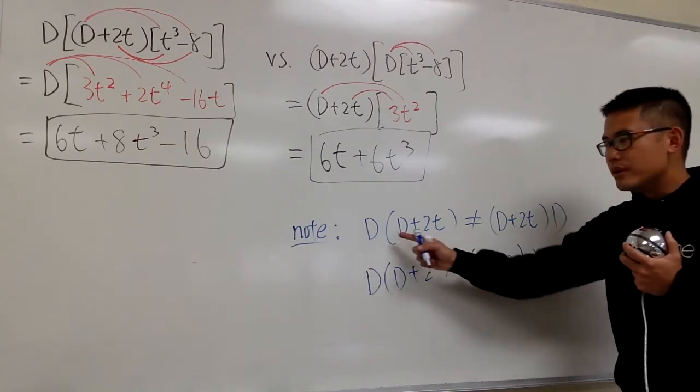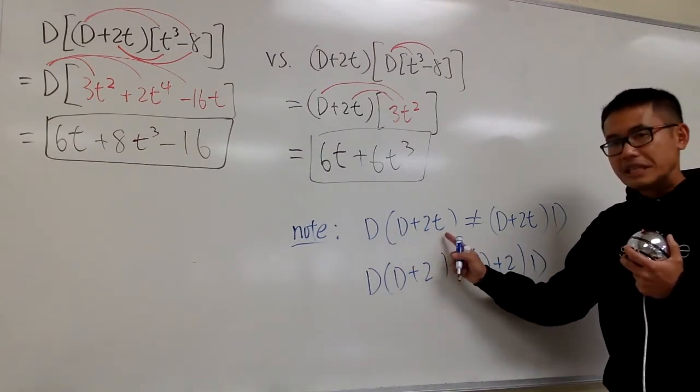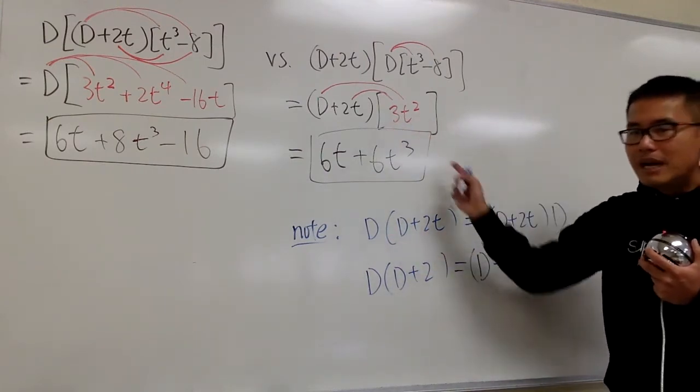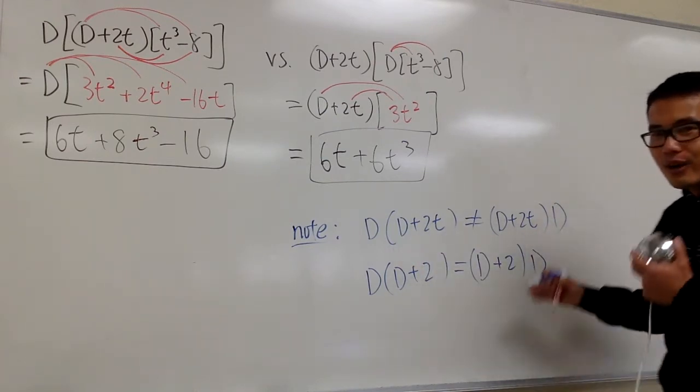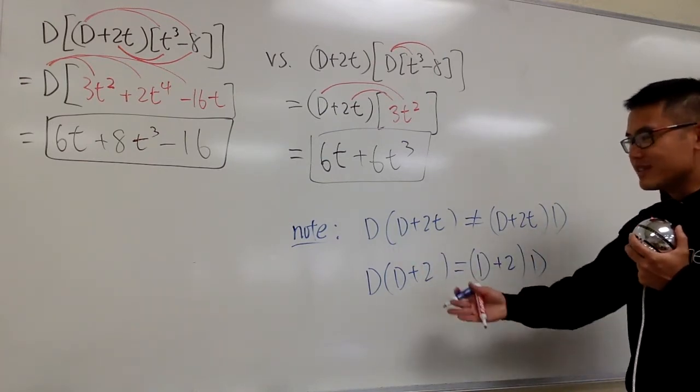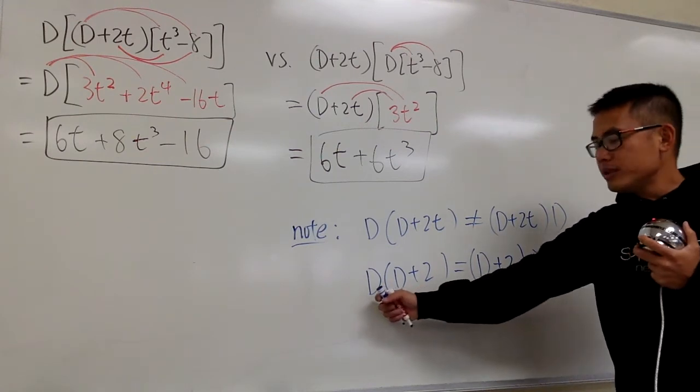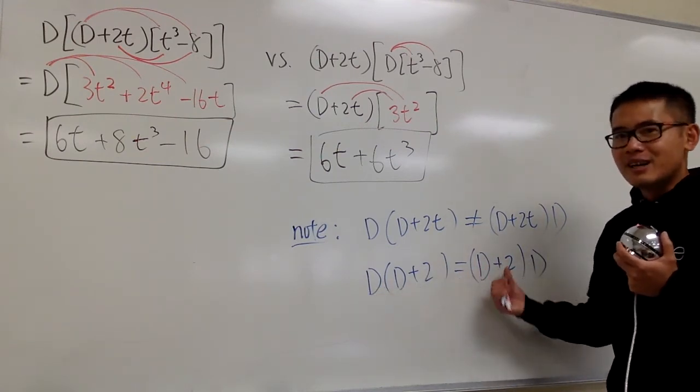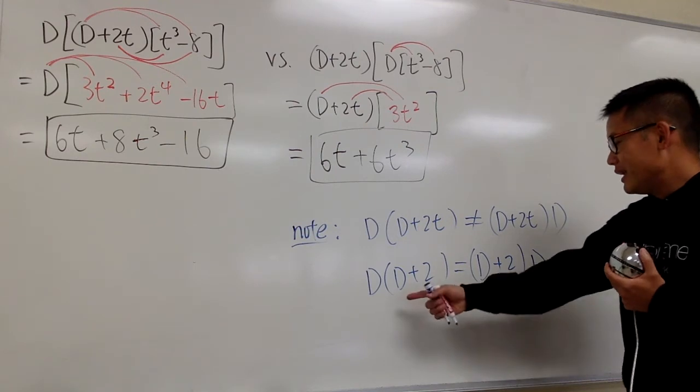Once again, because the operator notation contains the T, the order matters in this case. Be careful when you are using the capital D notation. Only when we have just constants can you treat them as polynomials.